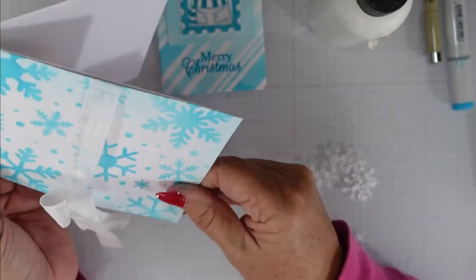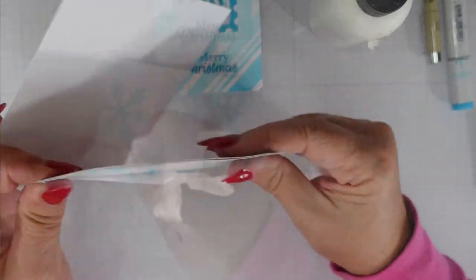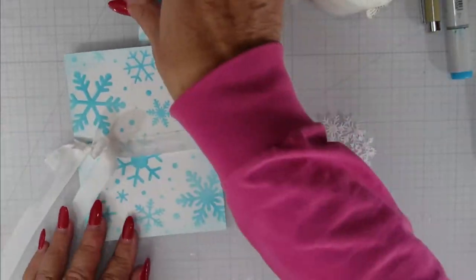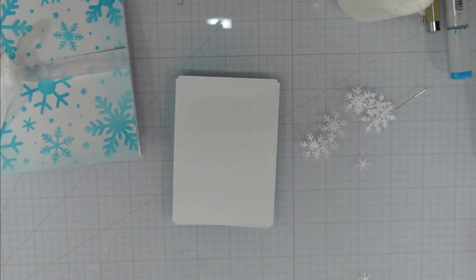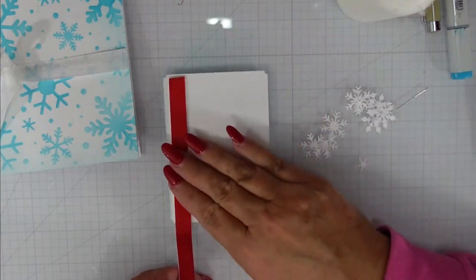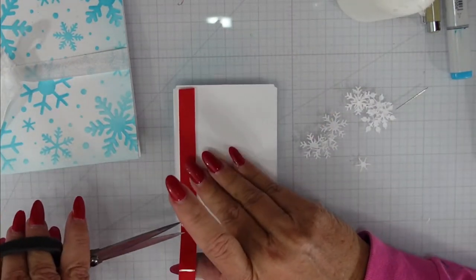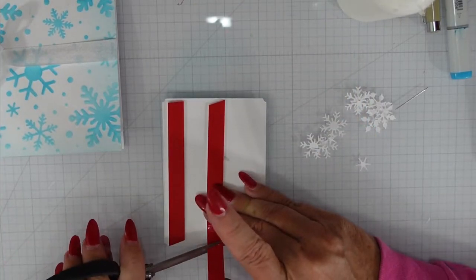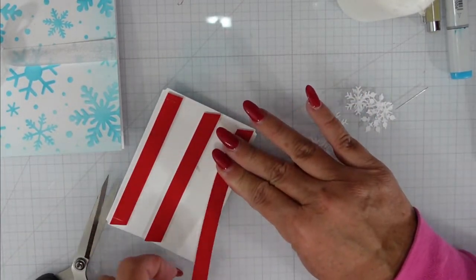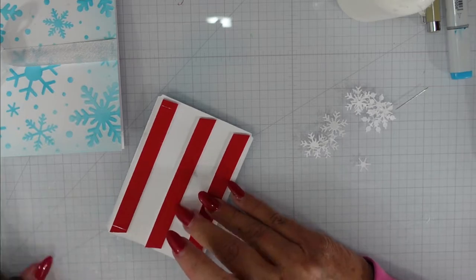And then we're going to add that candy cane striped base to the top of that. I'm going to add a little bit of foam tape so that I get that little bit of pop that I like. And of course, I'm not going to bore you with the removal of the release paper because it does take me a little bit to remove the release paper from this particular foam tape.